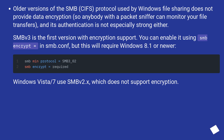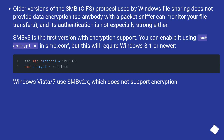Older versions of the SMB/CIFS protocol used by Windows file sharing do not provide data encryption, so anybody with a packet sniffer can monitor your file transfers, and its authentication is not especially strong either.